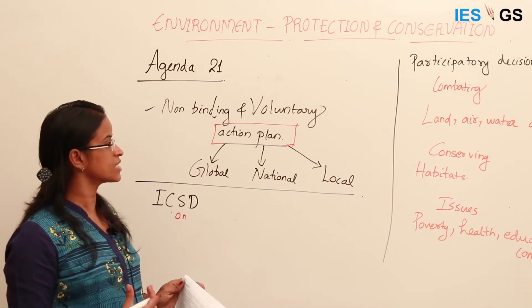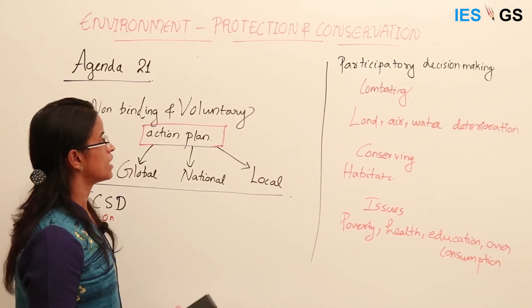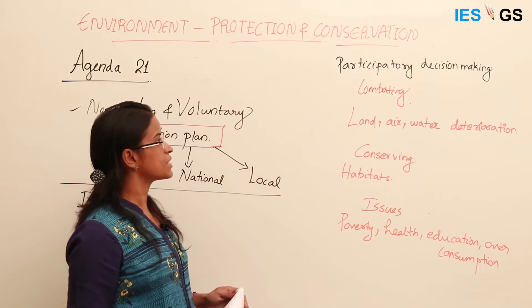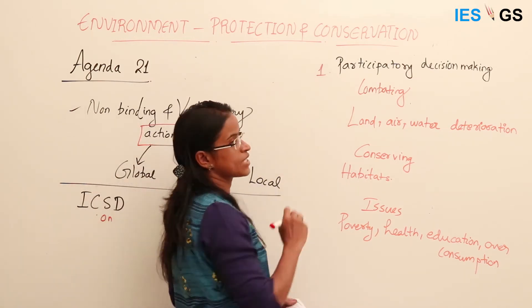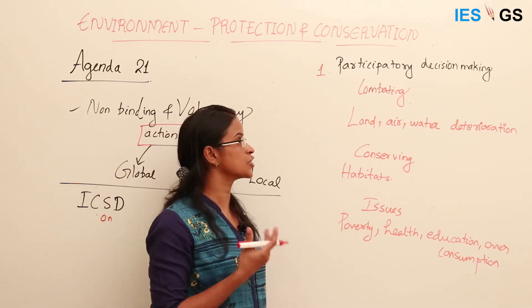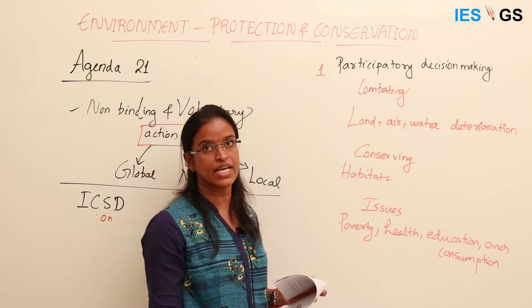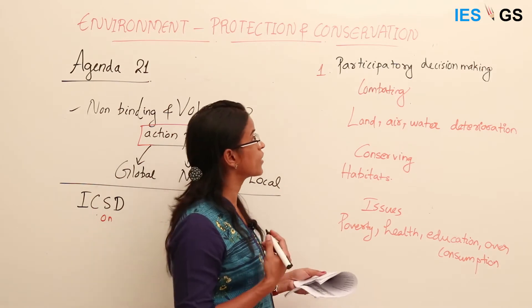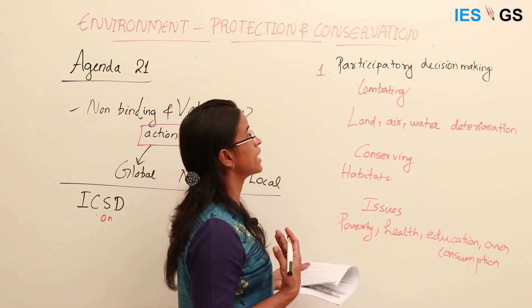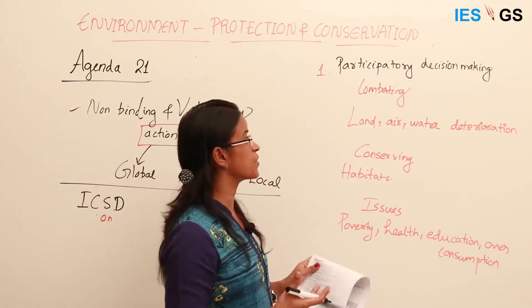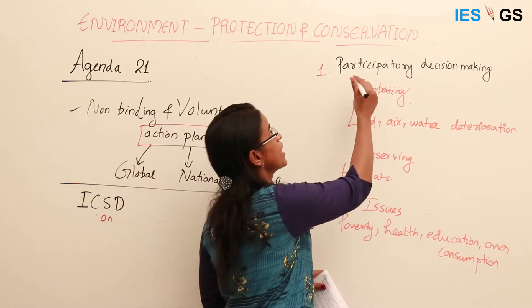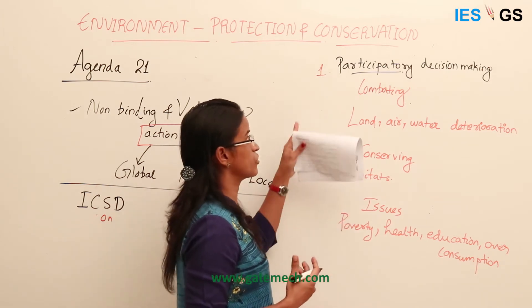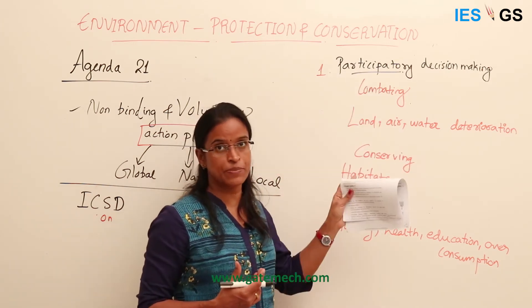The actions included under Agenda 21 cover different topics, including participatory decision making. Governments are encouraged to ensure the participation of different stakeholders including students, trade unions, governments, businesses, scientists, youth, and indigenous people. Decisions should be made on a participatory basis, so nations following Agenda 21 will try to implement participatory decision making in their governance.